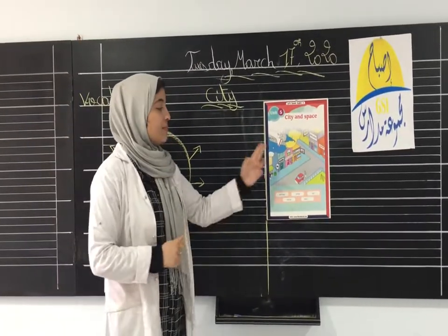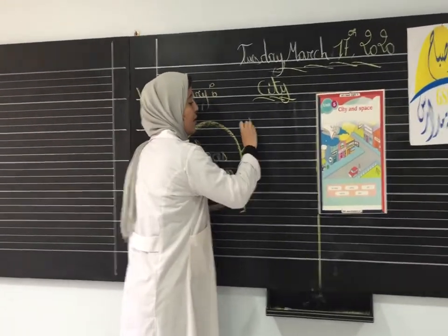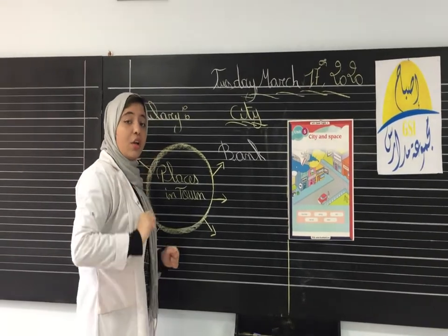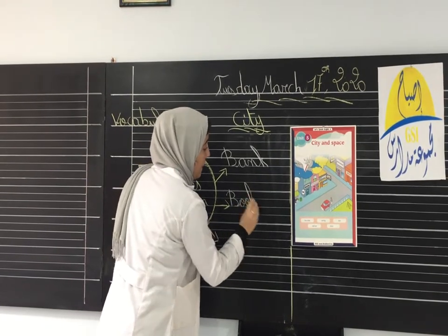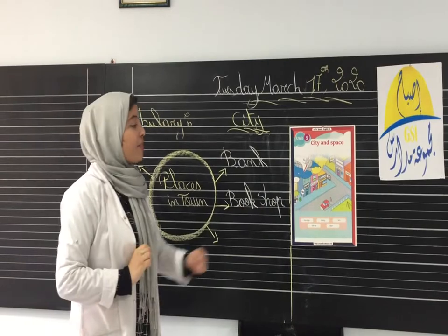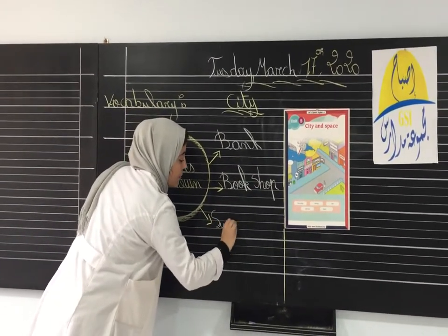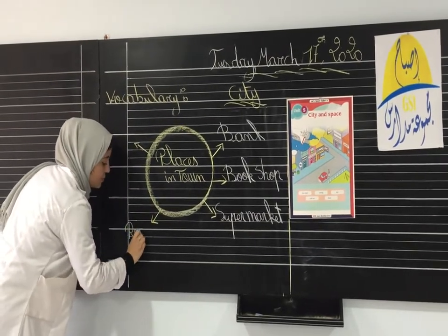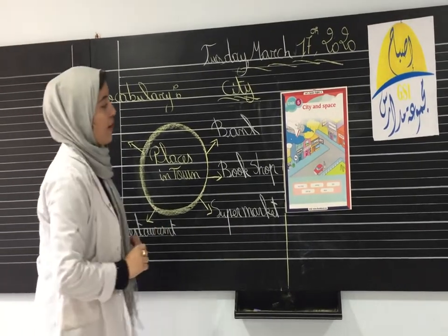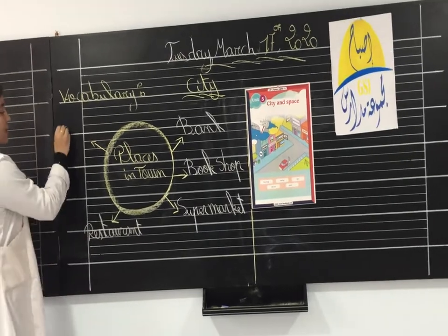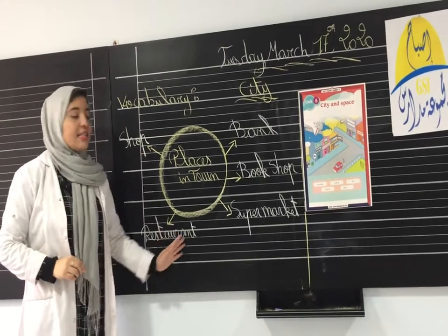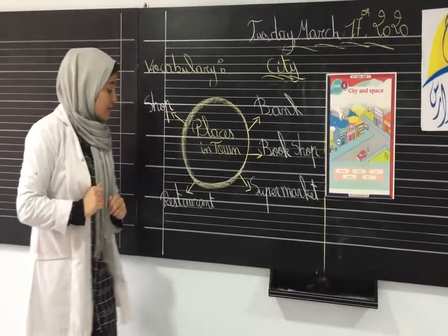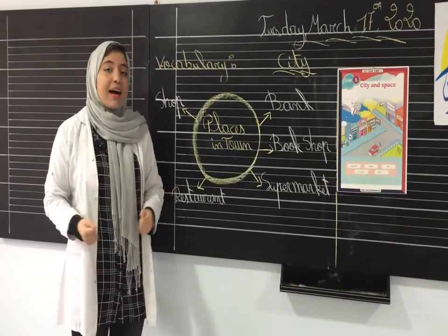Can you remind me of the places that we have seen? We have seen a bank, a bookshop — write with me in your notebook — supermarkets, a restaurant, and a shop. These are the places that we find in town or in the city: banks, bookshop, supermarkets, and a shop where you can buy your clothes.